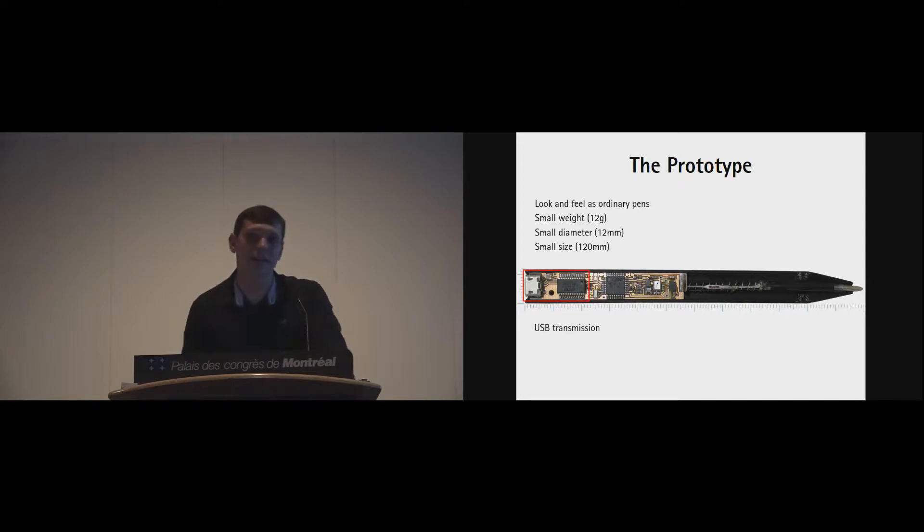From the inner side, we first have USB transmission. We chose USB because we wanted to simply delete potential problems with wireless transmissions in the first step. Then we have our microcontroller, which gathers all the sensor data and sends them to the PC. Of course, our microphone with an amplifier and an inertial measuring unit, which consists of an accelerometer and gyroscope.